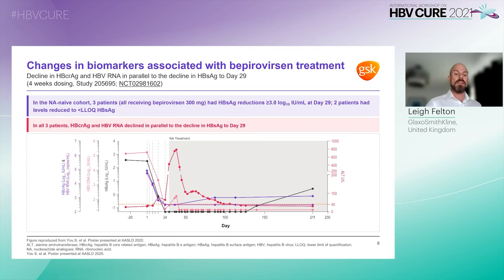As demonstrated in a single treatment-naive patient, there was an overall positive correlation in HBV-RNA and HBcrAg with HBsAg declines, confirming that bepirovirsen can target S antigen from transcriptionally active cccDNA.